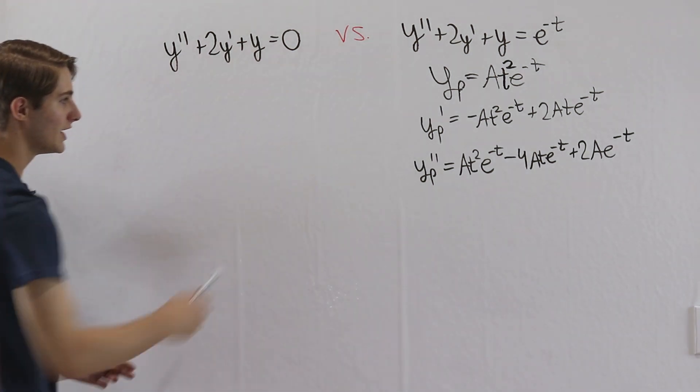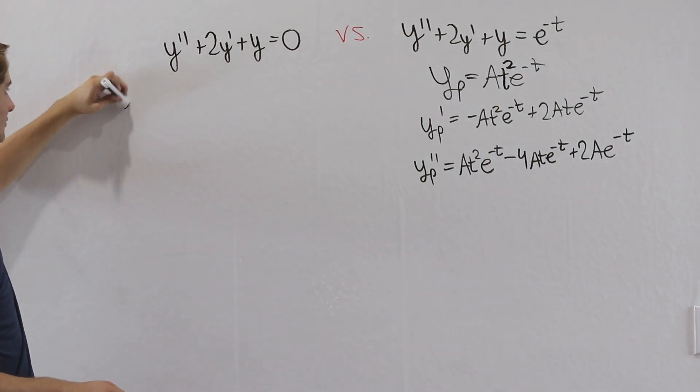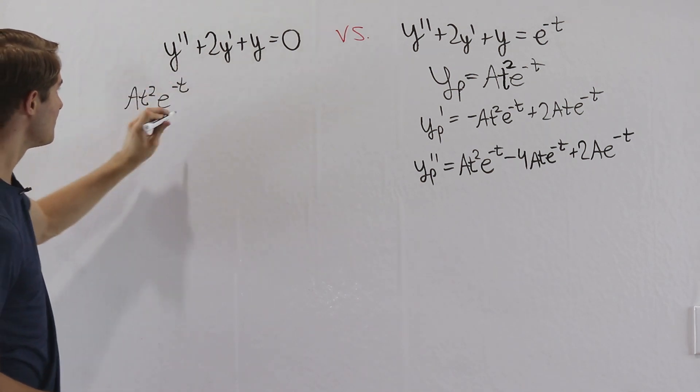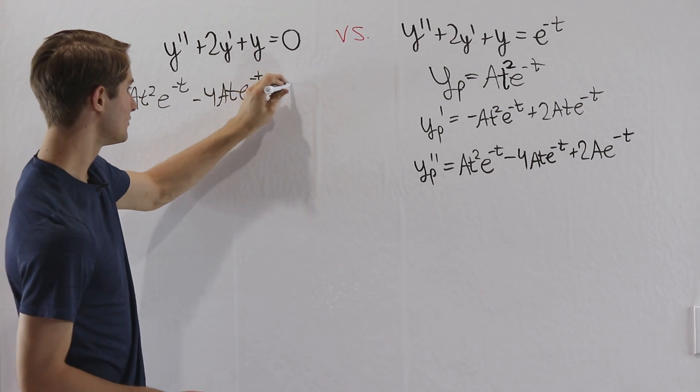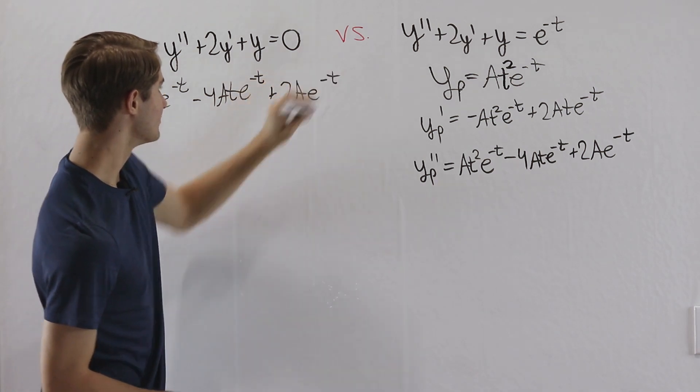First of all, we have y double prime. That's going to be equal to a t squared e to the negative t minus 4 a t e to the negative t plus 2 a e to the negative t.